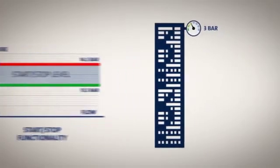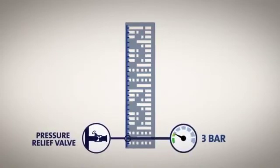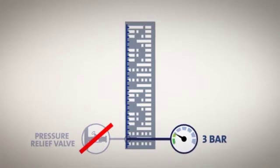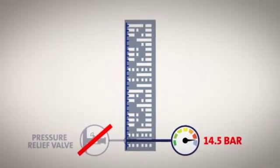To reduce the pressure on the lower floors, pressure relief valves must be fitted on the riser pipe. Otherwise, the pressure on the ground floor will be equal to the stop level, in this case 14.5 bar, which is far too high. In buildings that are maximum 50 meters high, pressure relief valves may not be necessary.